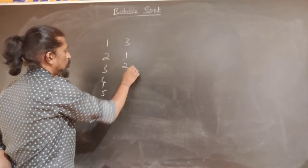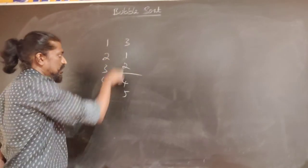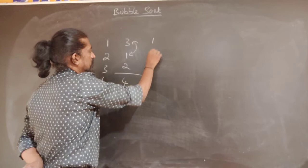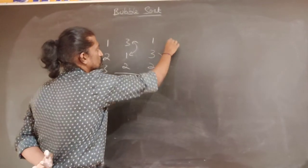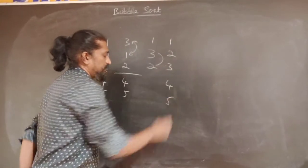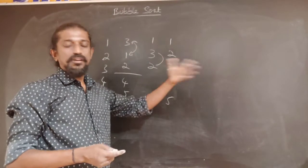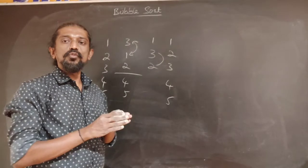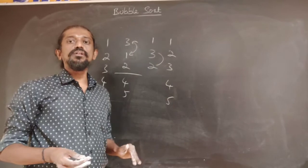After pass 1 and pass 2, in pass 3 we compare 3 and 1 — out of order, swap: 1, 3, 2. Then 3 and 2 — out of order, swap: 1, 2, 3. All elements are now sorted. But without this optimization, in pass 4 we would still compare elements unnecessarily. The insight is: if no swaps occur in any pass, all subsequent passes can be skipped.